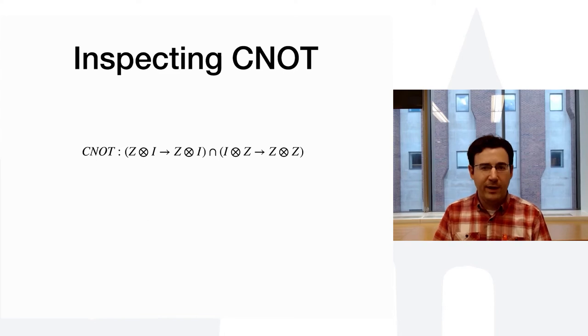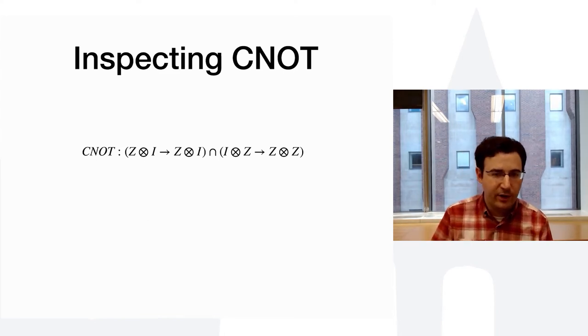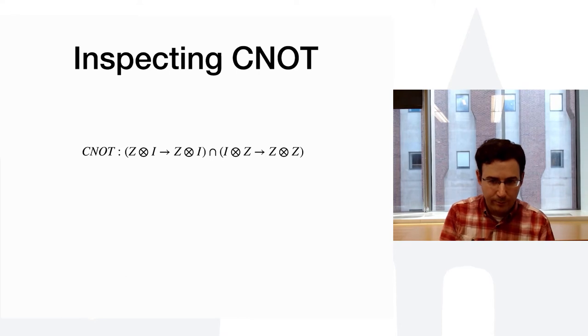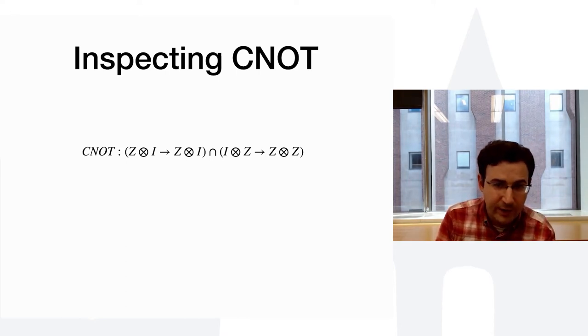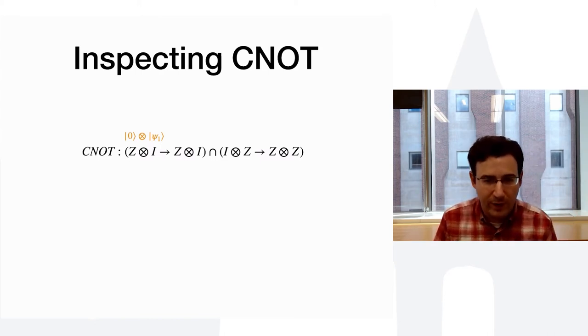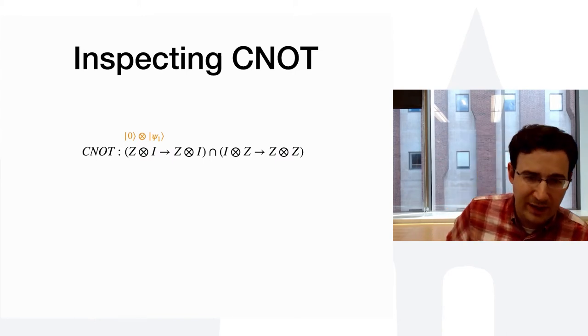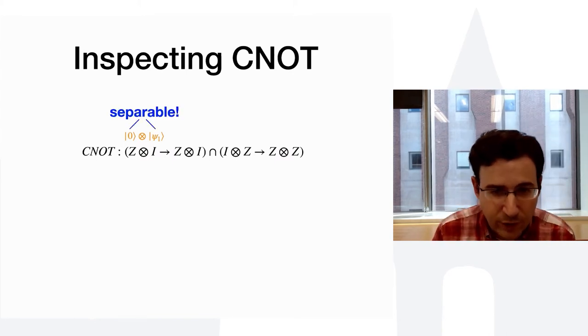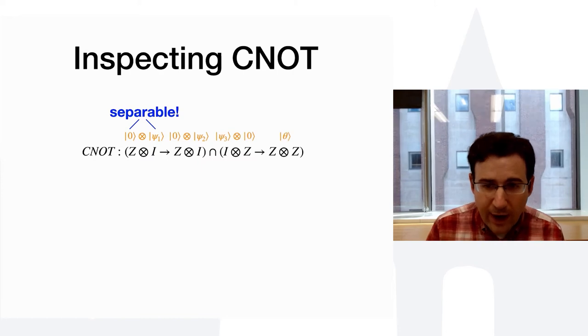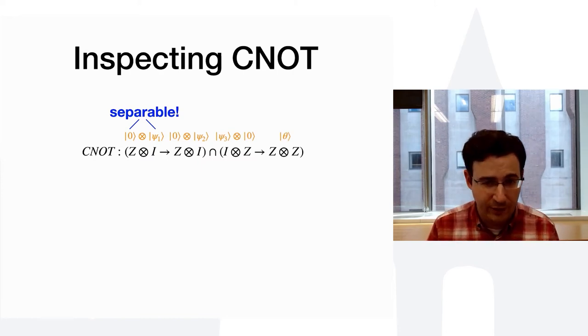So, to give you a flavor for what this type system can do, let's take a look at CNOT. And here I'm just taking two out of the four parts of the CNOT intersection type. And so, we have Z tensor I goes to Z tensor I, and I tensor Z goes to Z tensor Z. So, first observation is that Z tensor I corresponds to a separable pair, the first of which is in the Z basis, the second of which could be in an arbitrary basis. And that's important and useful to know. Likewise, for the other ZIs and IZs that we see, whereas Z tensor Z could very well be in an entangled state, as we'll see in a little bit.